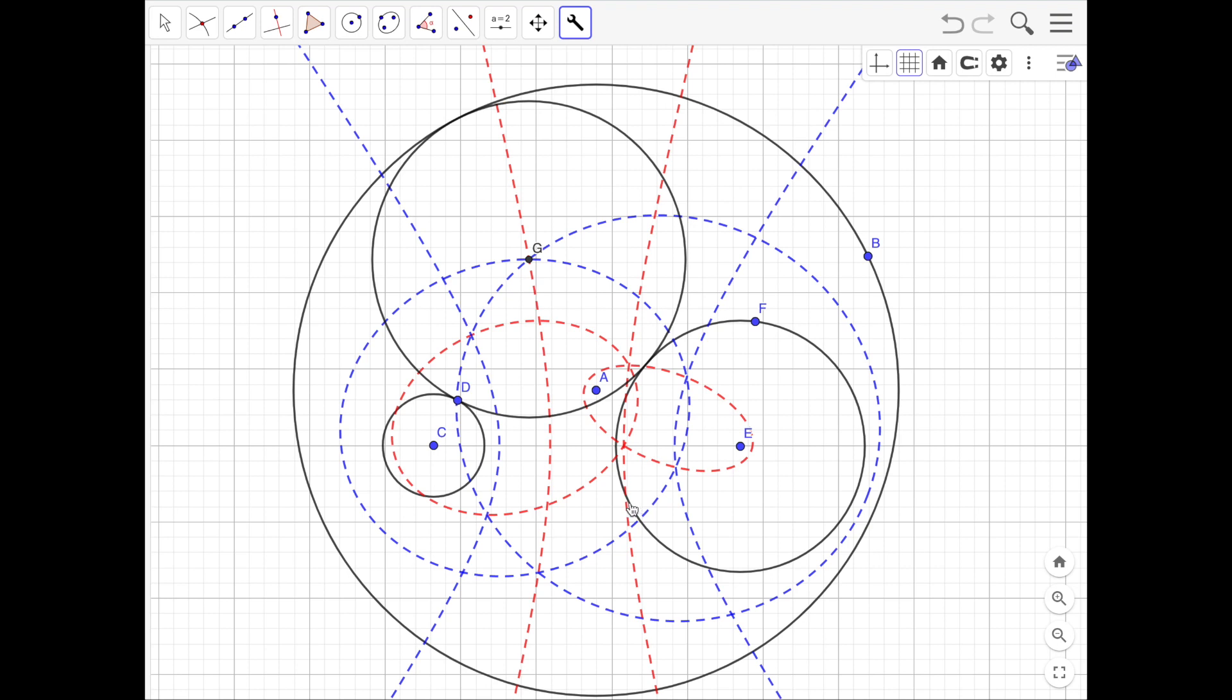And then we just draw the tangent circle. And there you have it. This circle is tangent to all three, and it uses the same process as we did for circles that are external to each other.